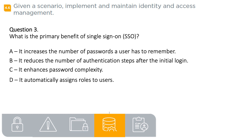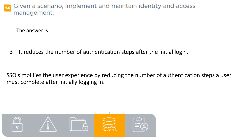Question 3. What is the primary benefit of single sign-on (SSO)? A. It increases the number of passwords a user has to remember. B. It reduces the number of authentication steps after the initial login. C. It enhances password complexity. D. It automatically assigns roles to users. The answer is B: it reduces the number of authentication steps after the initial login. SSO simplifies the user experience by reducing the number of authentication steps the user must complete after initially logging in.